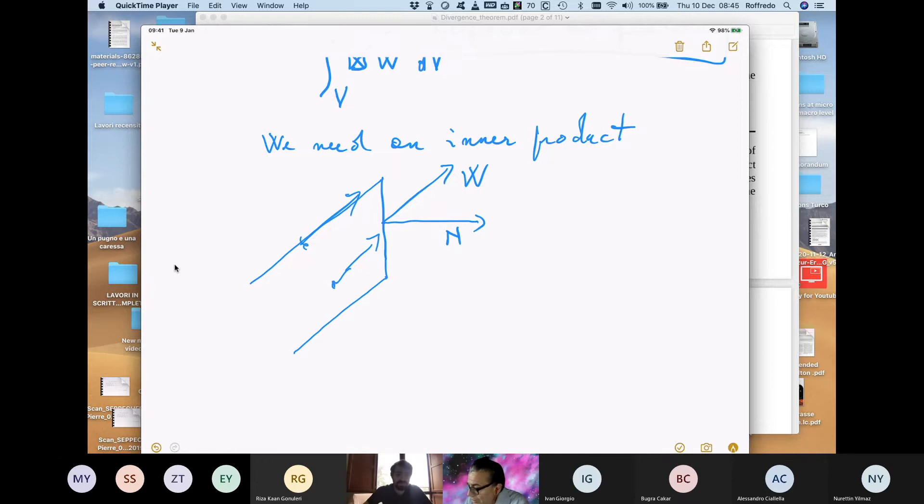So in order to estimate the amount of mass which is passing through this surface in the unit of time, you must simply calculate this inner product.